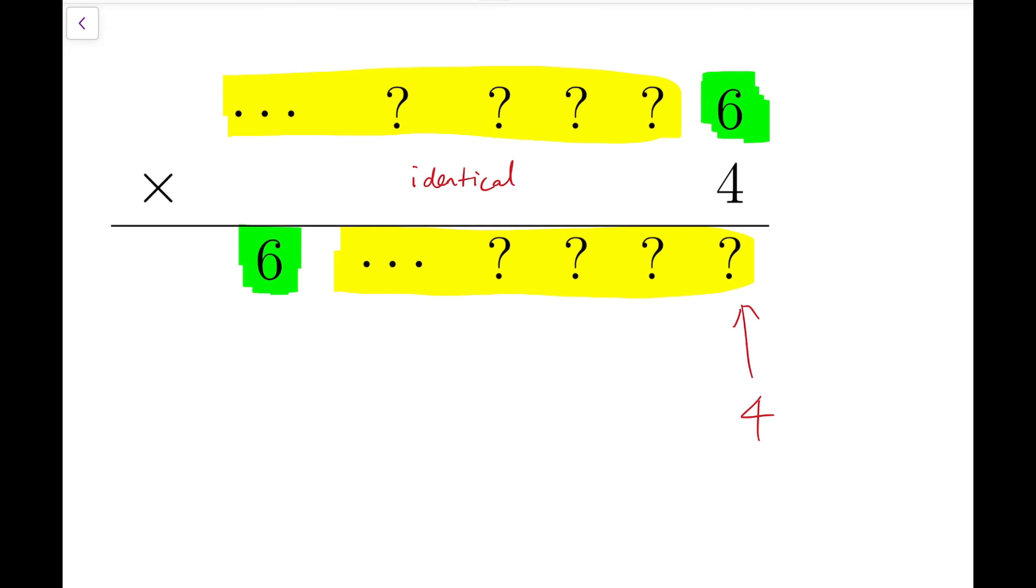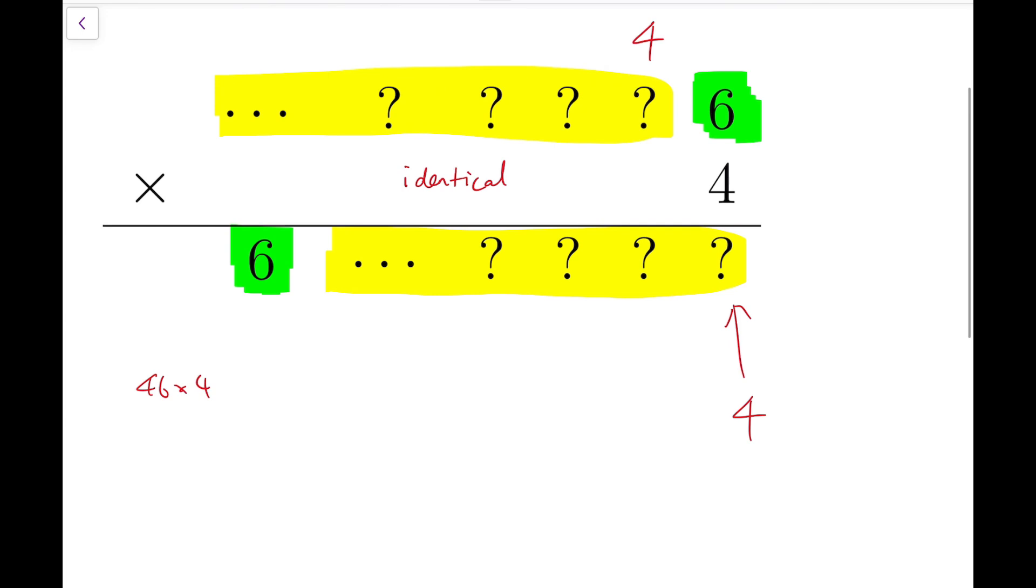Now notice that this is the last digit of the yellow block, so that means we should also have 4 at this digit. Now because 46 times 4 is equal to 184, that means the second last digit of the yellow block, which is the tenth digit of the product, must be 8.